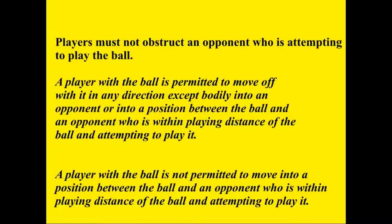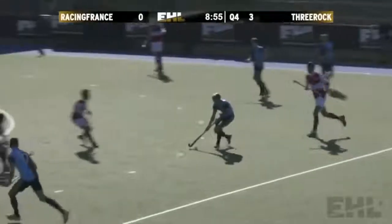I'm not too happy with the way the wording is set out in this clause. We don't need to be told that a player with the ball is permitted to move off in any direction — what we need to know is what a player with the ball is not allowed to do. Instead of explaining the prohibition as an exception to what is allowed, it would be better to state quite simply: 'A player with the ball is not permitted to move into a position between the ball and an opponent who is within playing distance of the ball and attempting to play it.' That covers shunting sideways while protecting the ball and all other positioning of the body between an opponent and the ball that prevents a tackle attempt. Did the attacker move to position between the ball and an opponent who was within playing distance and attempting to play it? Yes he did — that's obstruction.